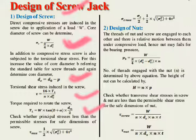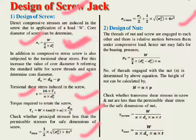Now check whether the principal stresses are within the permissible limits for a safe screw design. Using the calculated σc and τ, compute τ_max and σc_max using their respective formulas. Compare these values with the allowable values from the data book. If τ_max and σc_max are less than the permissible values, the design is safe; if greater, the design is not safe.